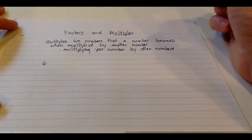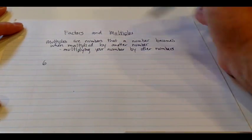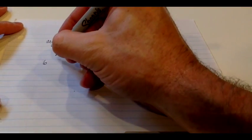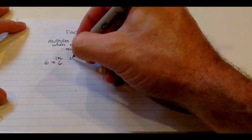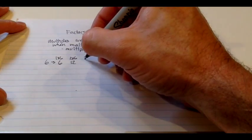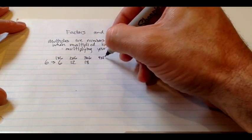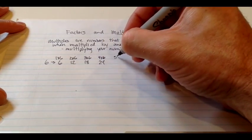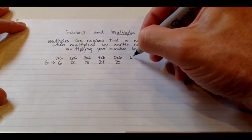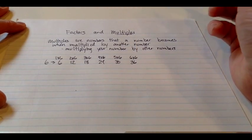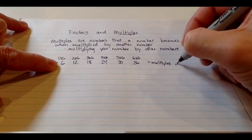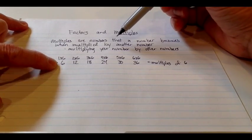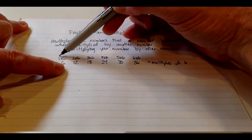Let's look at the number six and we'll look at some multiples of six. So again, numbers that a number becomes when multiplied by another number. So 1 times 6 gives me 6, 2 times 6 gives me 12, 3 times 6 is 18, 4 times 6 is 24, 5 times 6 is 30, and 6 times 6 is 36. So multiples are numbers that a number becomes when multiplied by another number.